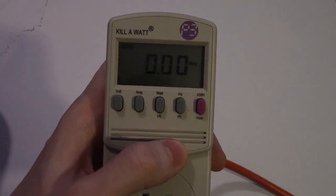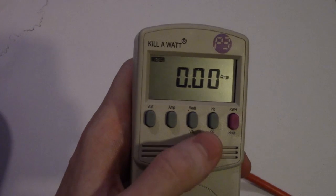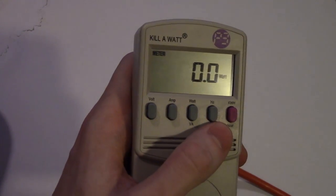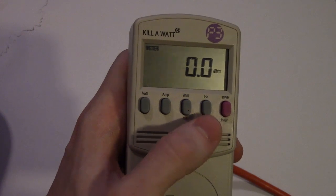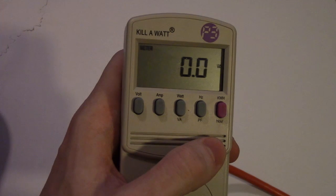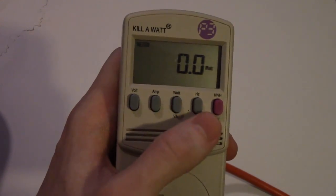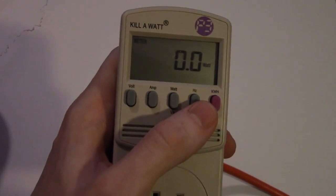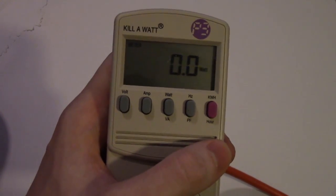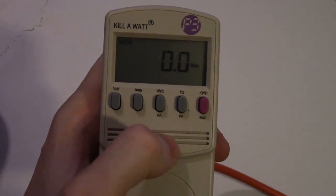The next one over is your current, and that's measured in amps. I don't have a load on it right now, so it's not going to show anything. Next to that is your watts. Then there's volt amperes. They're kind of a certain estimation on power usage.